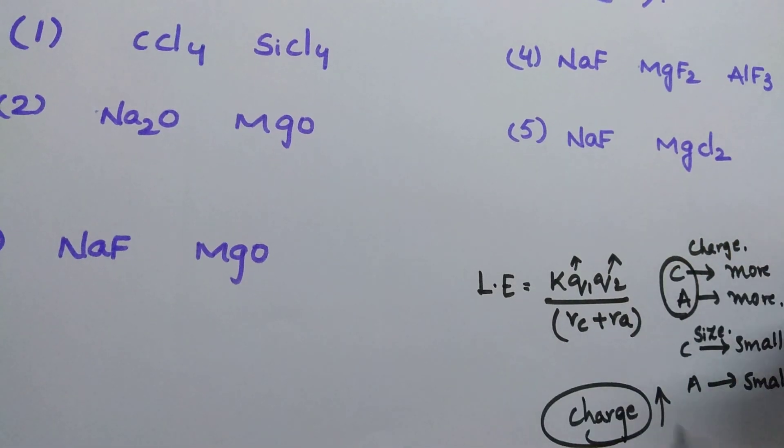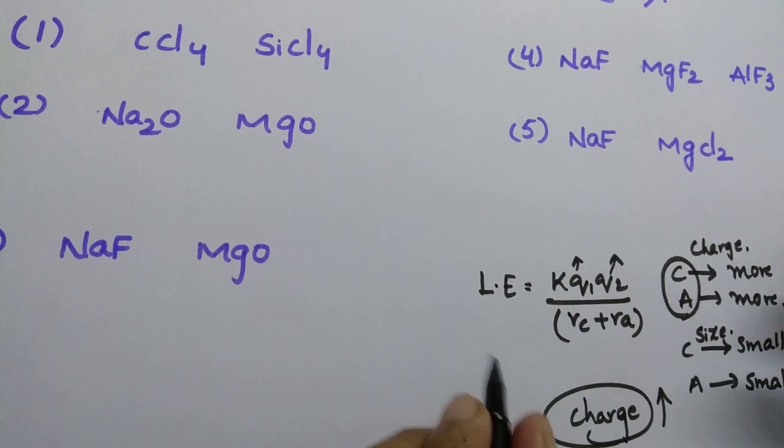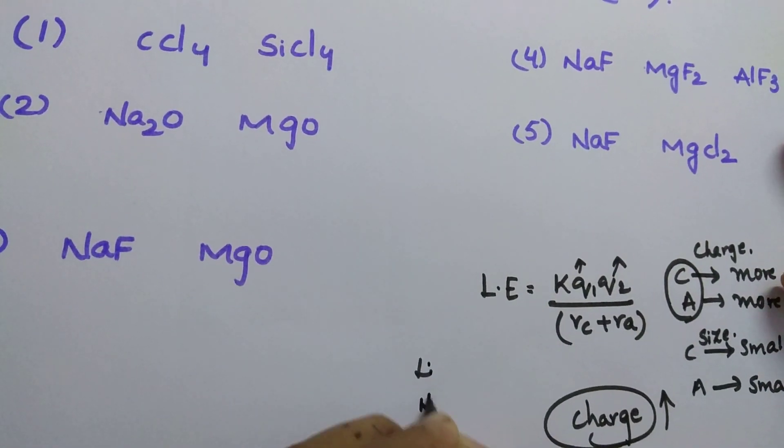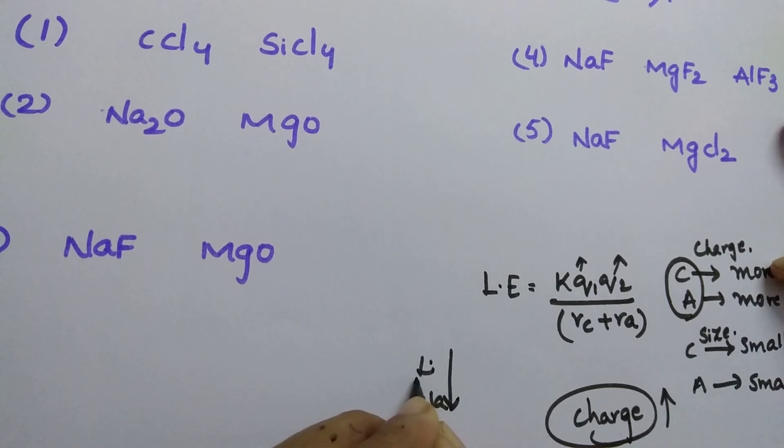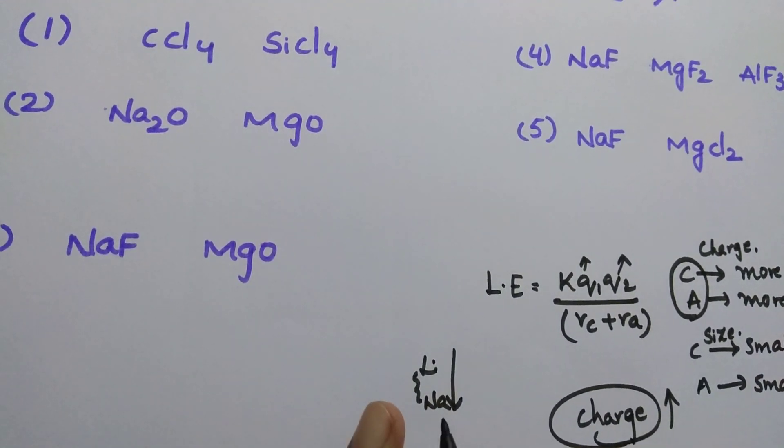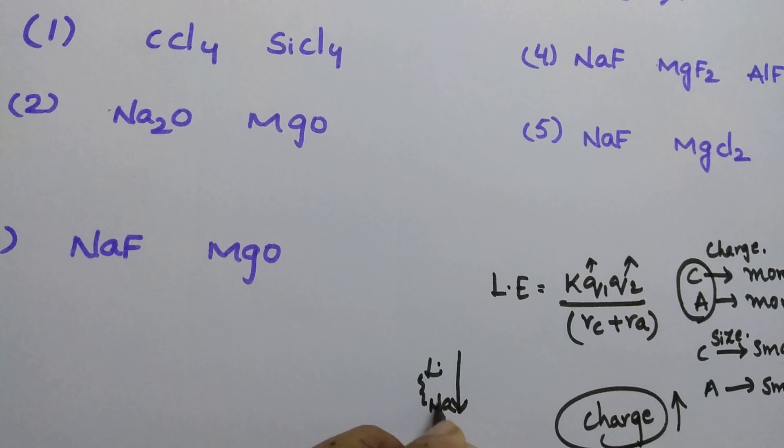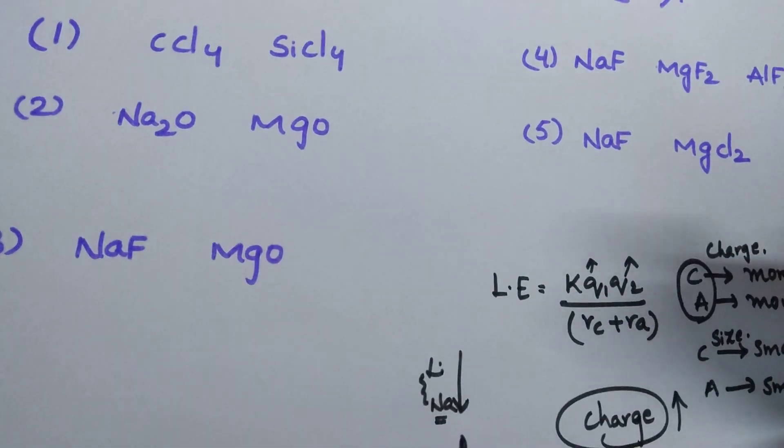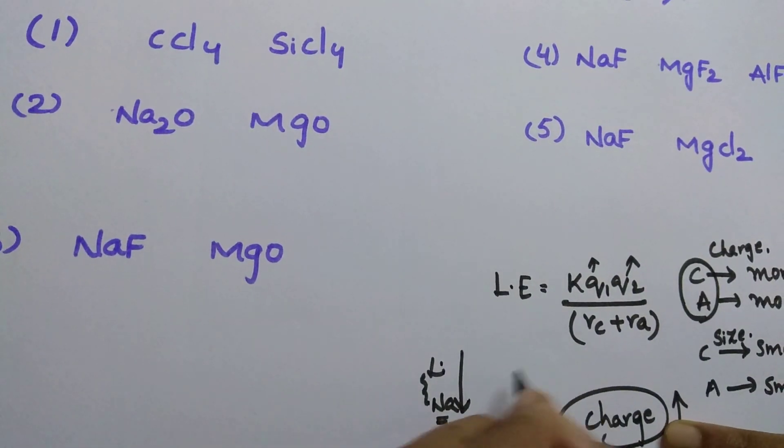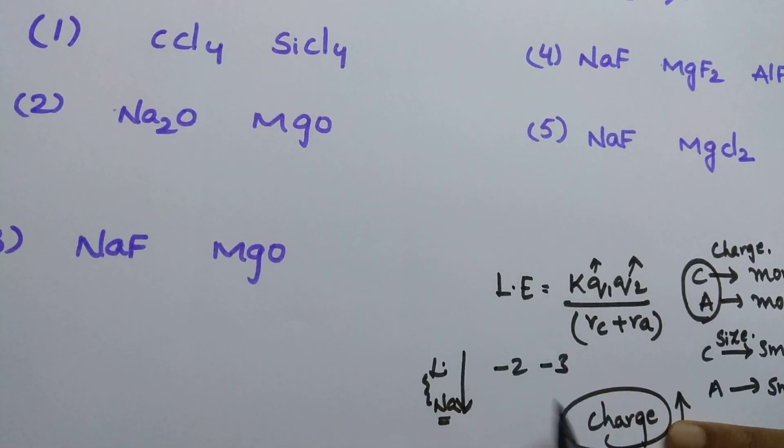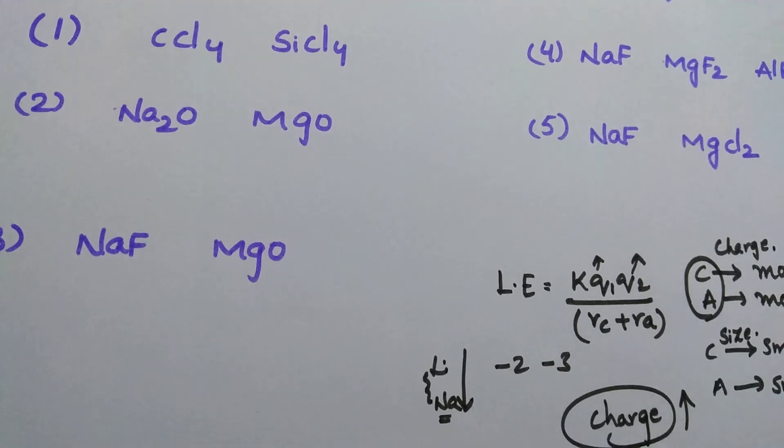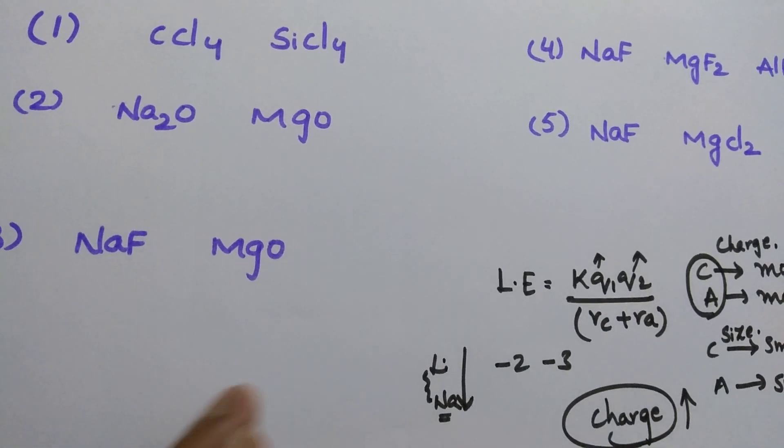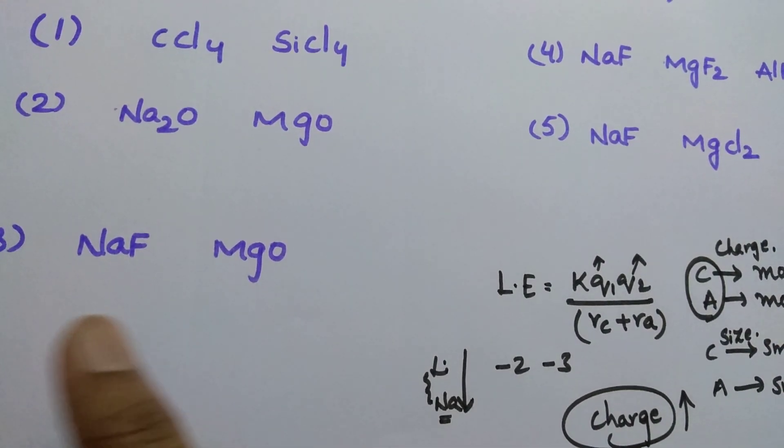When coming to the size, there will be less effect of the size. Lithium, sodium, if you see top to bottom, there is a little decrease in the size, less than few picometers. But coming to the charge, if it is plus 1 versus plus 2, or minus 1 versus minus 3, one unit charge is completely different. That's why charge is always a dominating factor than the size.